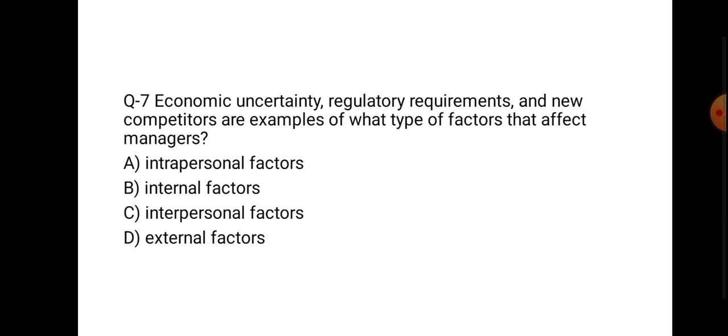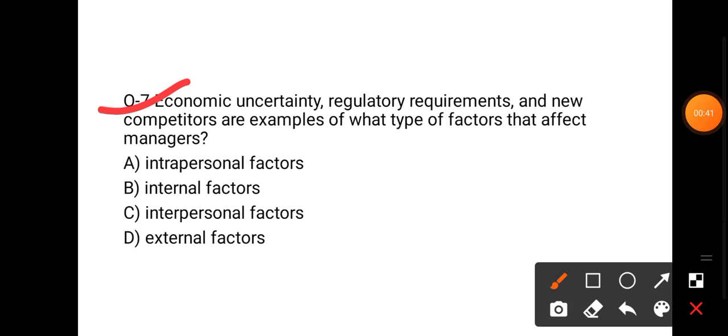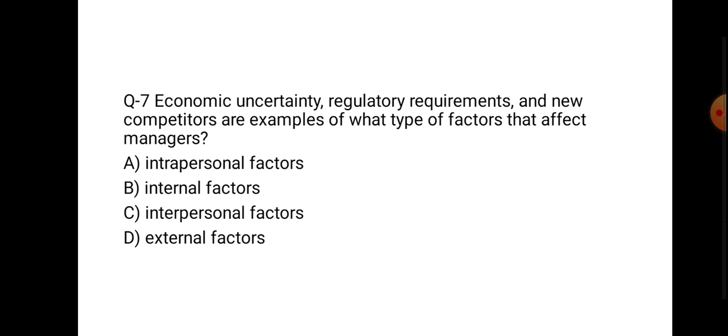Today's question is: Economic uncertainty, regulatory requirements, and new competitors are examples of what type of factors that affect managers? Economic uncertainty like inflation, deflation—which factors affect the managers? The options are: A) intrapersonal factors, B) internal factors, C) interpersonal factors, D) external factors. You can type your answer.